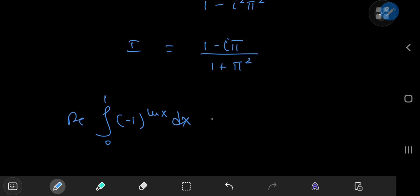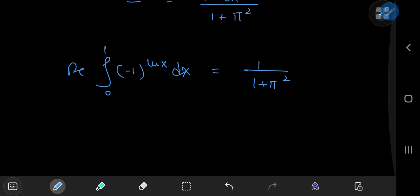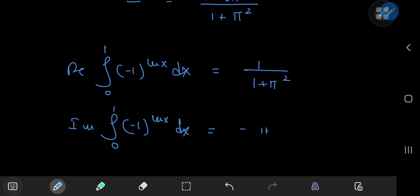So the real part of this integral is 1 by 1 plus pi squared and the imaginary part of this integral looks even better. It's negative pi divided by 1 plus pi squared.